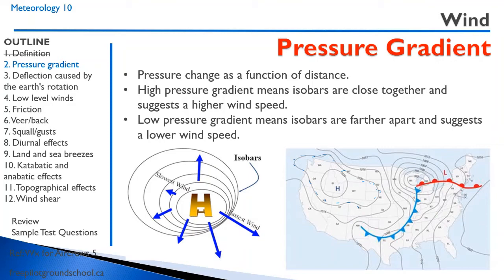A low pressure gradient means the isobars are farther apart and suggests a lower wind speed. Looking at the map, this area here is a high pressure gradient — notice how close these isobars are together, so we're going to have very strong winds around this low pressure region. Whereas this high pressure region would be a low pressure gradient and you'd have much lighter winds.